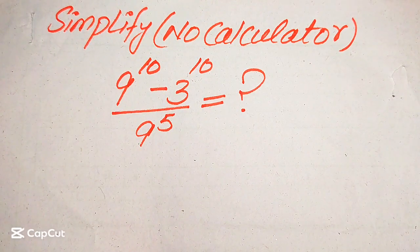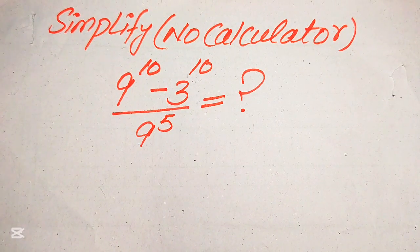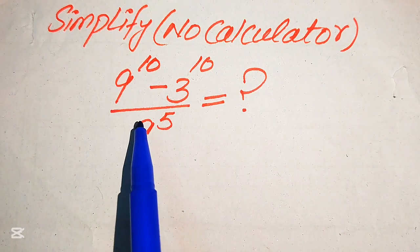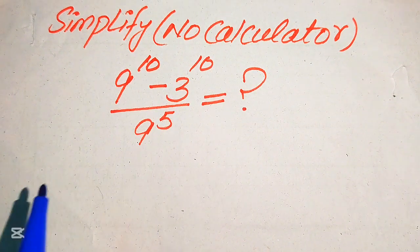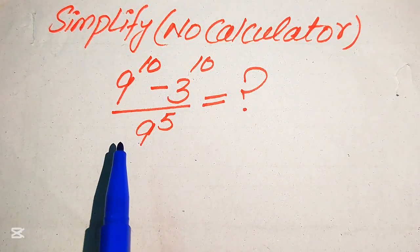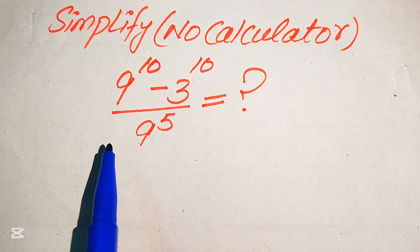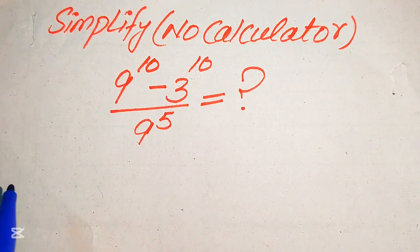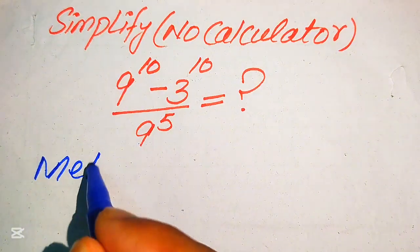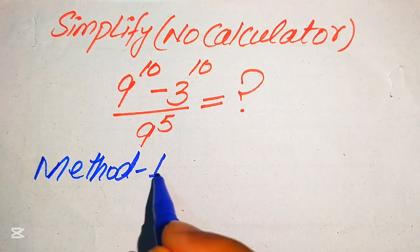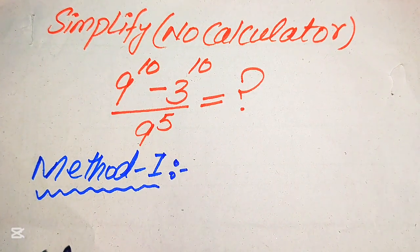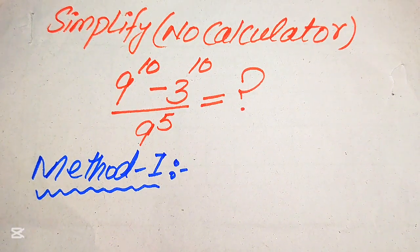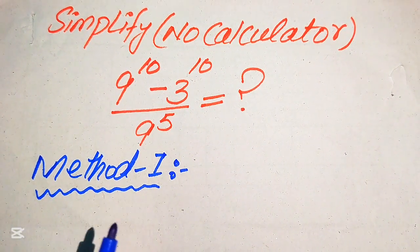Hello everyone. How to simplify this nice algebraic expression: 9 to the power of 10 minus 3 to the power of 10, divided by 9 to the power of 5. Here we write this algebraic expression into simplified form. We solve this problem using two methods, and I hope you like both of these methods. If you have any other method in mind, please don't hesitate to write it in the comment section.